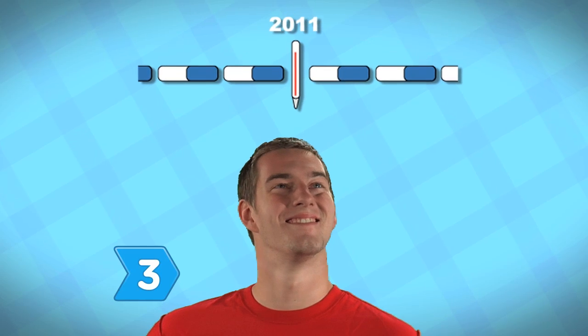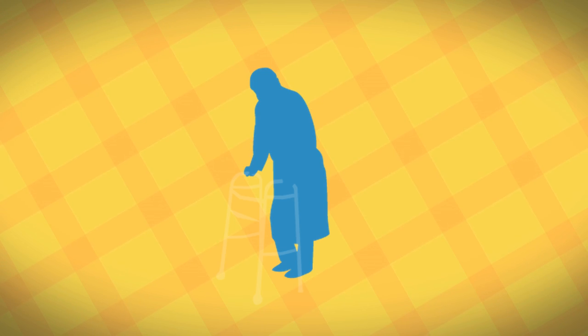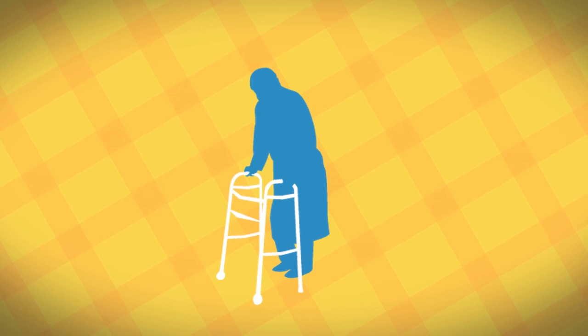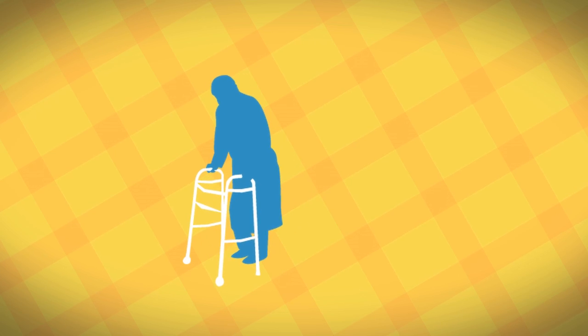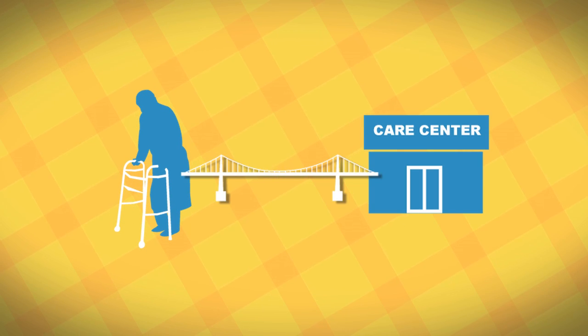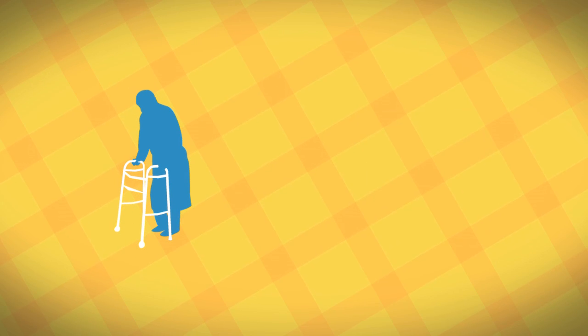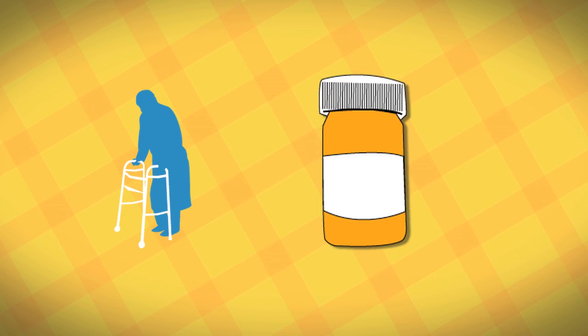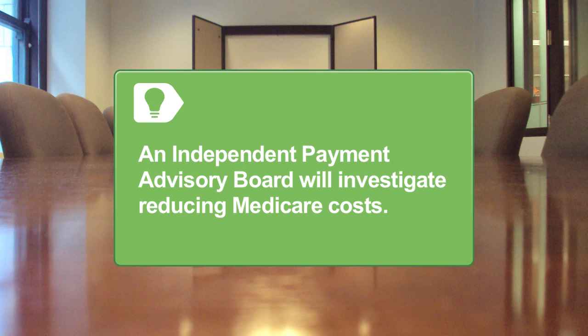Step 3: Review the 2011 health care reform measures. Free preventive services for seniors on Medicare, a new program designed to connect seniors to community care after hospital stays, and prescription drug discounts for qualified seniors. An independent payment advisory board will focus on ways to reduce Medicare costs and waste.